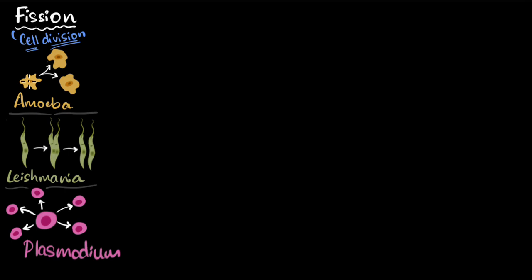Now, there are some organisms like amoeba and leishmania. In them, when fission happens, you get two new individuals. So we call this binary fission. Binary stands for two. But in cases like plasmodium, you get multiple new organisms. So in this case, you call it multiple fission.